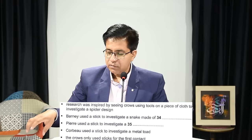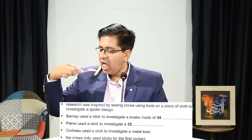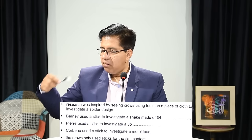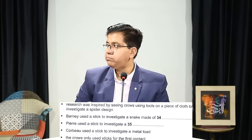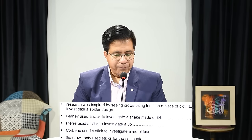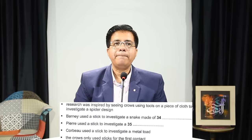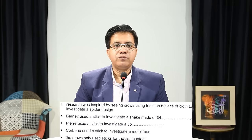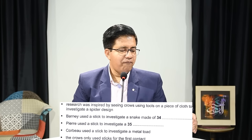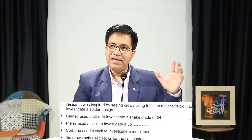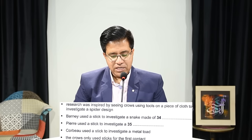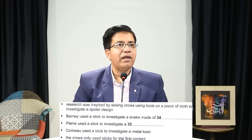The audio confirms: 'In this research, five pairs of crows including Barney underwent tests to see how they would react to a variety of objects. On eight occasions a bird's first contact was by using a tool. In all three trials, Barney began by using a stick for inspection — one involved a rubber snake.' Answer: rubber.